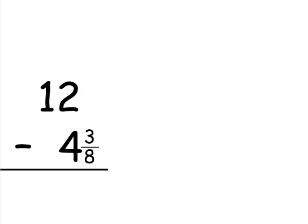When subtracting a mixed number from a whole number, we need to add a fraction part. We'll borrow 1 from the 12. How many 8's make a whole? Well, 8 8's. So 1 is equal to 8 8's.